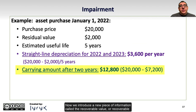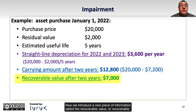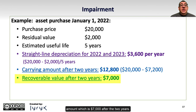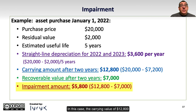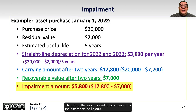Now we introduce a new piece of information called the recoverable value, or recoverable amount, which is $7,000 after the 2 years. We use that recoverable value to determine if there is any impairment. In this case, the carrying value of $12,800 exceeds the recoverable amount of $7,000. Therefore, the asset is said to be impaired by the difference, or $5,800.